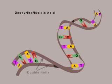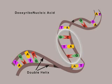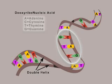It comes in the form of a twisted ladder called a double helix. The rungs of the ladder are built with a four-letter DNA alphabet — A, C, T, and G — where each letter stands for a different base component of DNA.